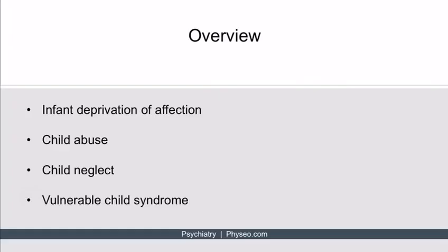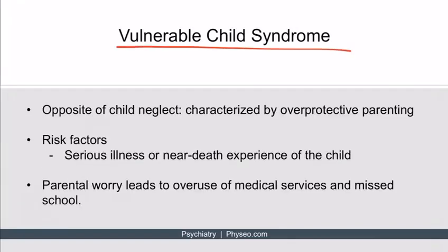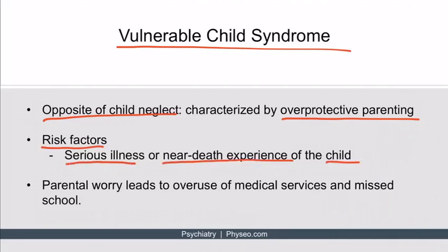Now let's discuss vulnerable child syndrome, which is the opposite of child neglect — it's characterized by overprotective parenting. Risk factors include a serious illness or near-death experience of the child. The parent's heightened worry about their child's risk of getting sick or injured can result in overuse of medical services and even missing school. Basically, the parent overcorrected — they weren't neglectful, but they still harmed their child.